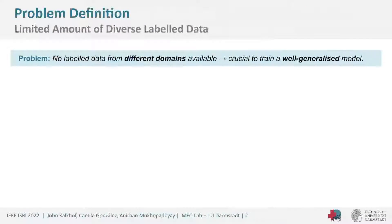In medical imaging it is a common problem to only have labeled data available from a single domain. But for training a well-generalized model it is crucial to have data from different domains. This is no different in hippocampus segmentation, which is particularly interesting for the diagnosis and treatment of neuropsychiatric disorders.